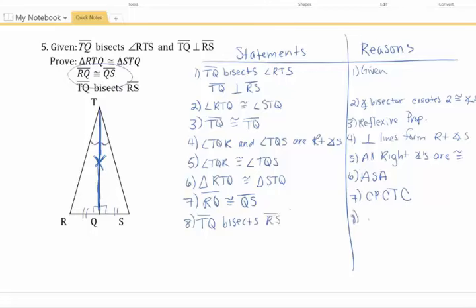So now I can say TQ bisects RS, and the reason being a bisector splits a segment into two congruent parts, which I had right here. I showed it right before. So this is what an eight-step proof looks like, where you have to kind of keep track of everything that's going on throughout the whole thing.